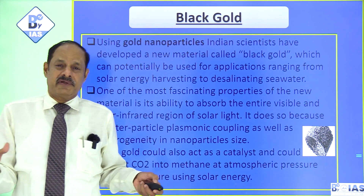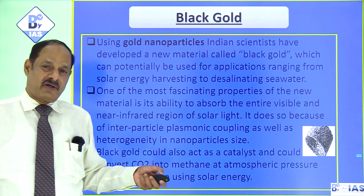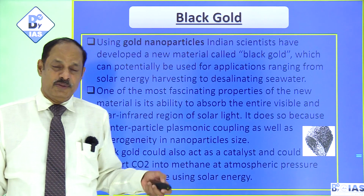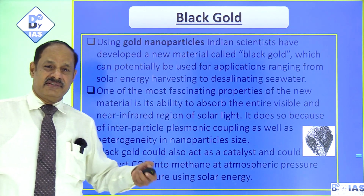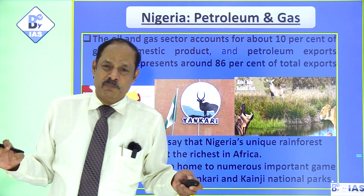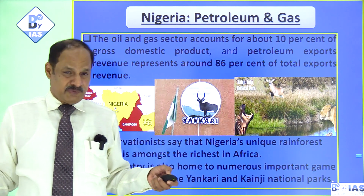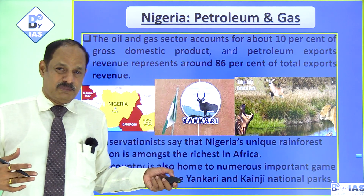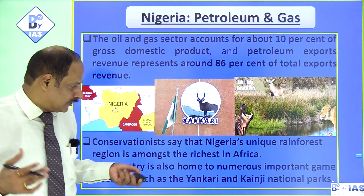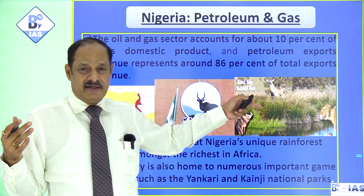Black gold is an important discovery by Indian scientists using nanoparticles of gold to develop a substance useful for desalinating seawater, particularly in Chennai where there is a water crisis. Nigeria is an important country for oil and gas exports — more than 85% of their domestic produce is exported. Apart from this, Nigeria also has rich biodiversity with important game reserves such as the Yankari and the Kainji Lake sanctuaries.